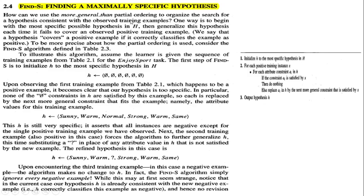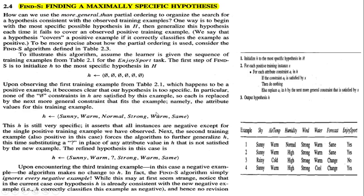How can we use the more-general-than partial ordering to organize the search for a hypothesis consistent with the observed training examples? One approach is to begin with the most specific possible hypothesis. We have a table with six attributes and one decision attribute. The Find-S algorithm finds the most specific hypothesis in H.